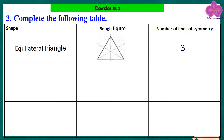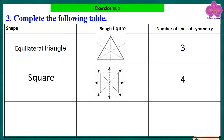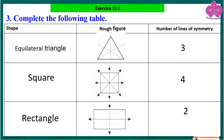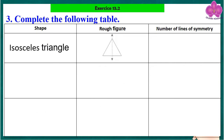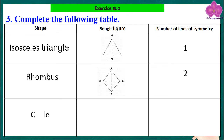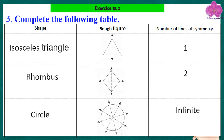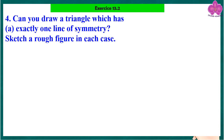Question 3: Complete the following table — one has been done for you. Square: number of lines of symmetry — four. Rectangle: number of lines of symmetry — two. Isosceles triangle: number of lines of symmetry — one. Rhombus: number of lines of symmetry — two. Circle: number of lines of symmetry — infinite.